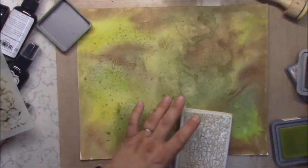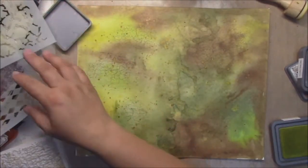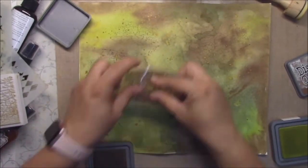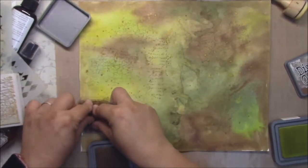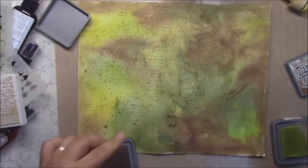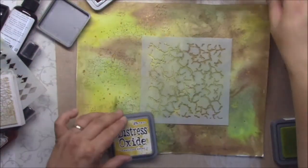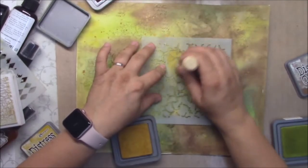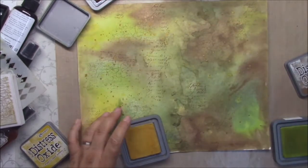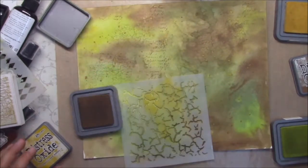Again I will be die cutting from these papers. So my stamping will be just random here and there. Here I have some script stamp. And stencil. Another distress oxide. And let's make some stenciling over the paper. It's really up to you. Maybe it's too light. Let's switch to vintage photo.